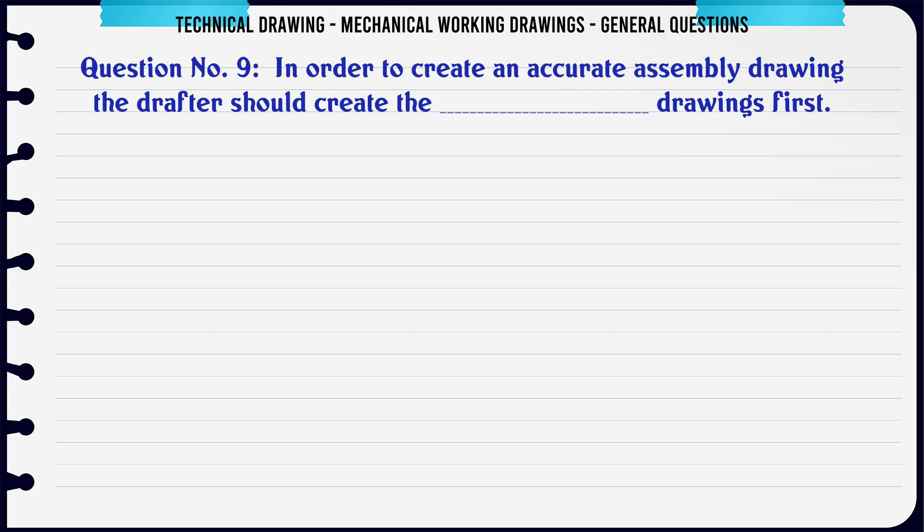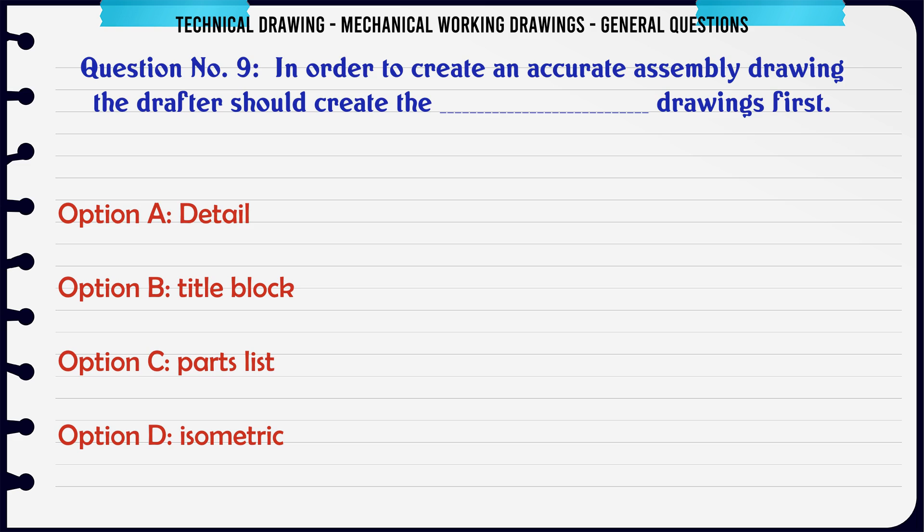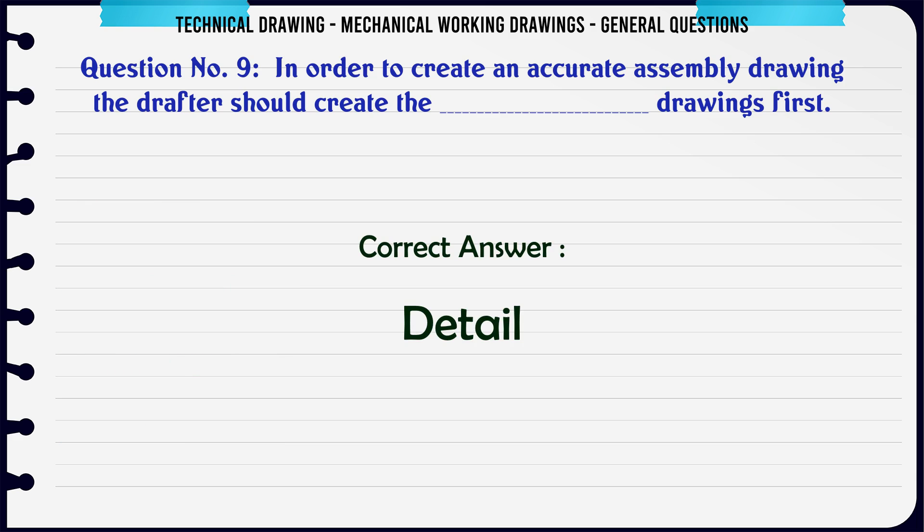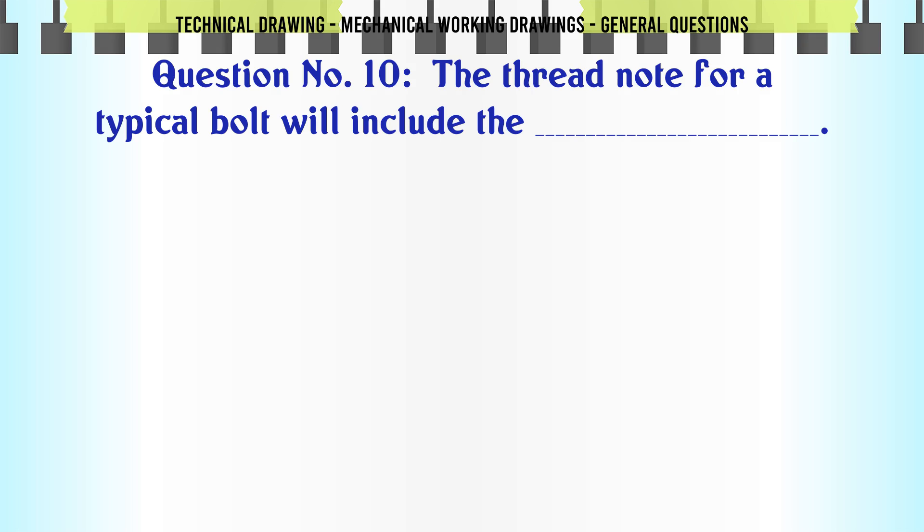In order to create an accurate assembly drawing the drafter should create the drawings first: A. Detail, B. Title block, C. Parts list, D. Isometric. The correct answer is Detail.